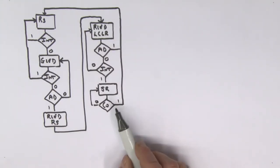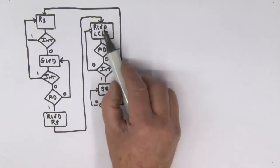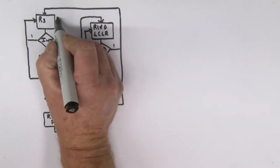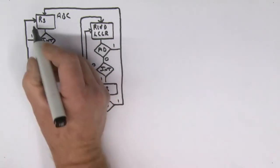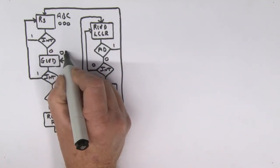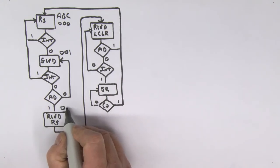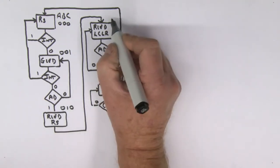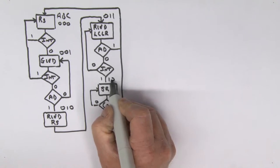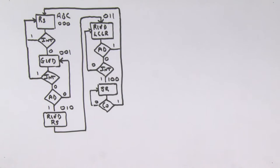That's our state diagram and the design of our system. Now let's produce the state table. We need to label the states — we've got five states, so we need three state variables, which we'll call A, B, and C. State 000, state 001, state 010, state 011, and state 100.